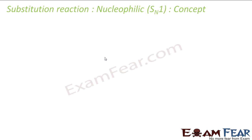Nucleophilic substitution reaction is the one where the attacking reagent is a nucleophile. We have two types: SN1 and SN2. SN1 stands for substitution nucleophilic, and the '1' means only one species is responsible — the rate-determining step is dependent on one substrate.